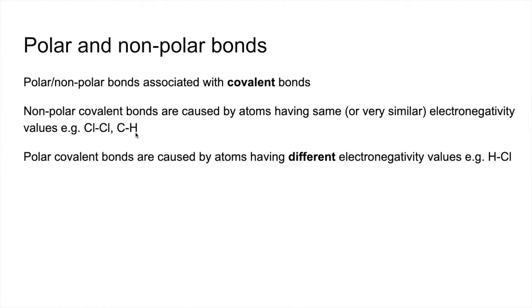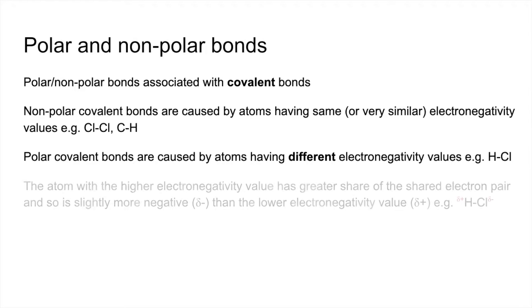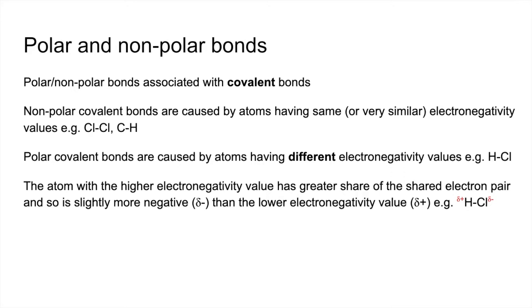Polar covalent bonds, on the other hand, are caused by atoms having different electronegativity values — the example here is HCl. The atom with the higher electronegativity value has the greater share of the shared electron pair in the covalent bond, and so it's going to be slightly more negative, shown with a delta minus sign, than the lower electronegativity atom, shown with a delta plus sign.